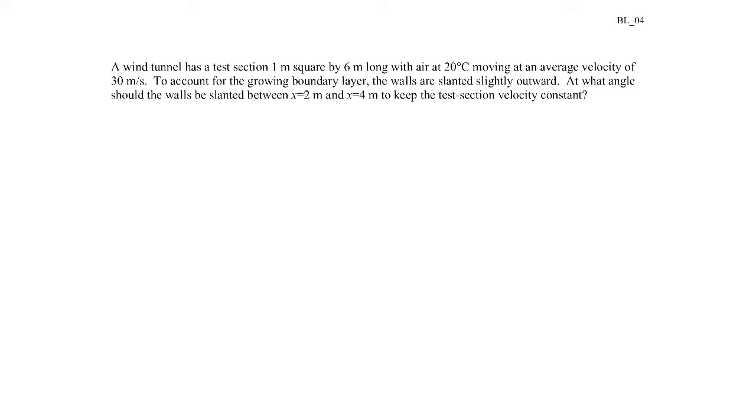In this example we have a wind tunnel with a test section that's square and six meters long, with air moving through it at an average speed of 30 meters per second. We're told that to account for the growing boundary layer along the walls, the walls are slanted slightly outward.